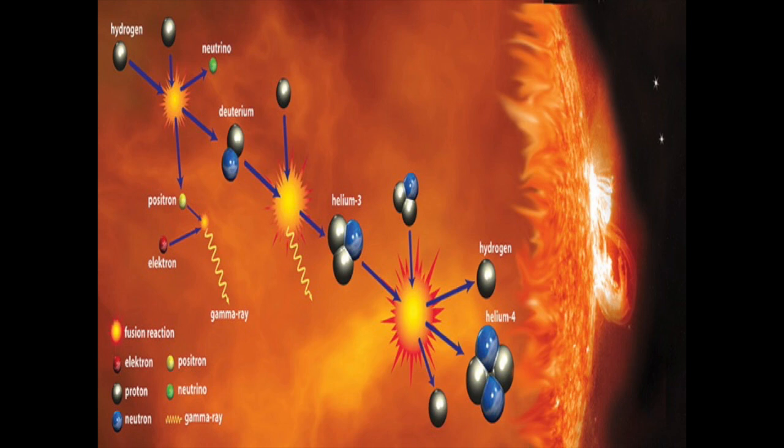It takes four hydrogen atoms to make one helium atom. If two hydrogen atoms are moving fast enough from the intense heat, they can actually fuse together to create a heavier element, helium.